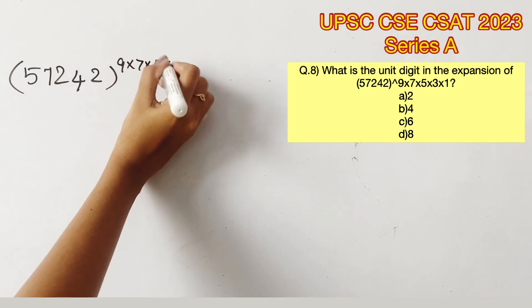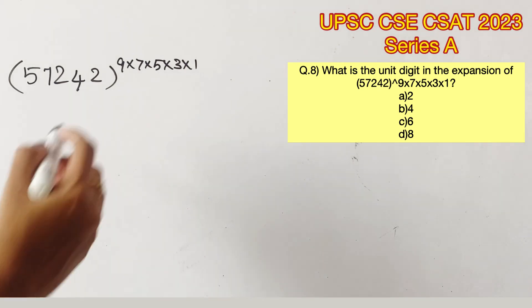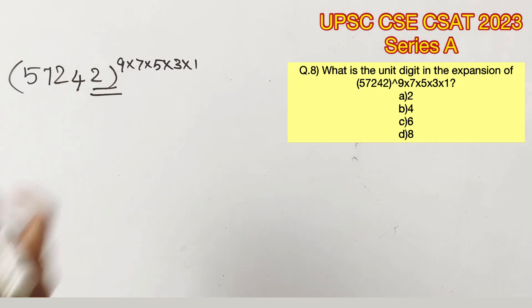We are supposed to find the unit digit in the expansion 57242 raised to the power 9×7×5×3×1. It's clear that we just have to find what number occupies the unit's place.